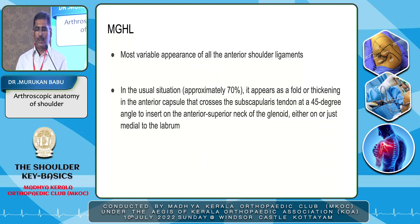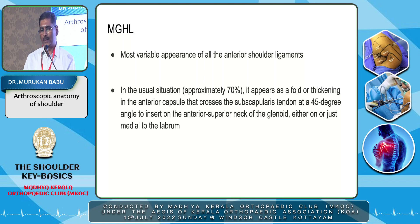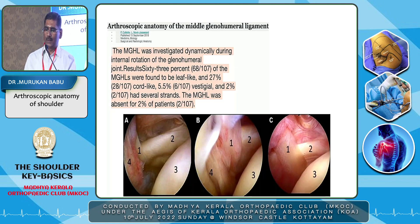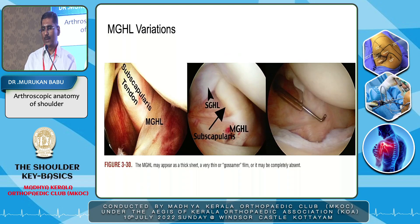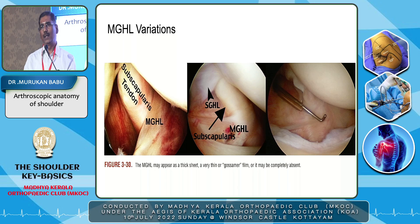Then comes the middle glenohumeral ligament — the most variable in appearance of all the anterior shoulder ligaments. In the usual situation, it appears as a fold or thickening in the anterior capsule that crosses the subscapularis tendon at 45 degrees. Sometimes it is cord-like, sometimes leaf-like — there are different names depending on the thickness. It can be a thick sheet-like structure, thin, or it may be completely absent. These are the anatomical variations of the MGHL.